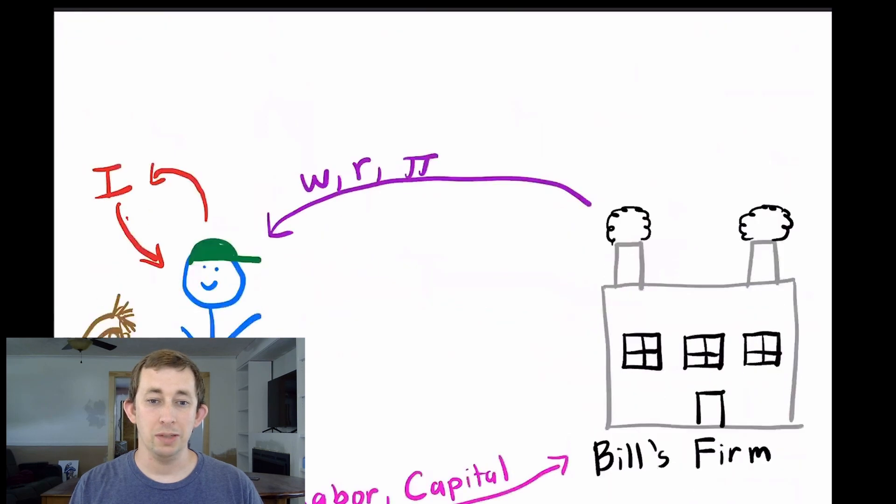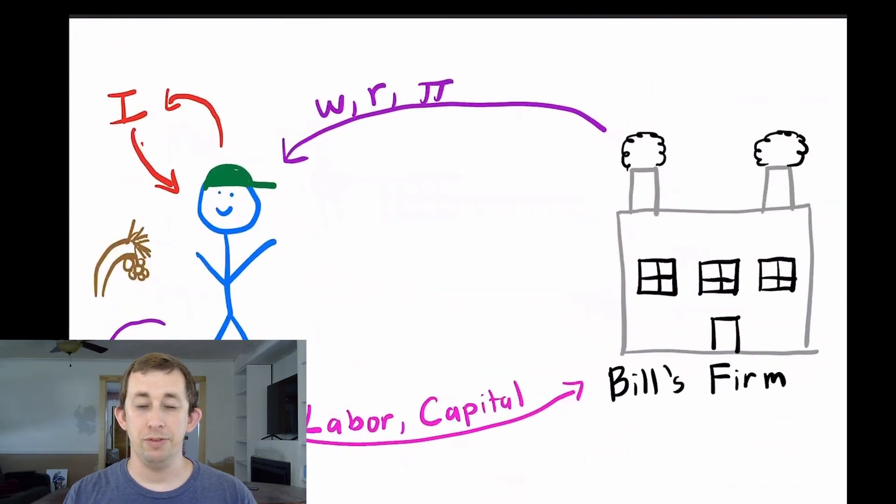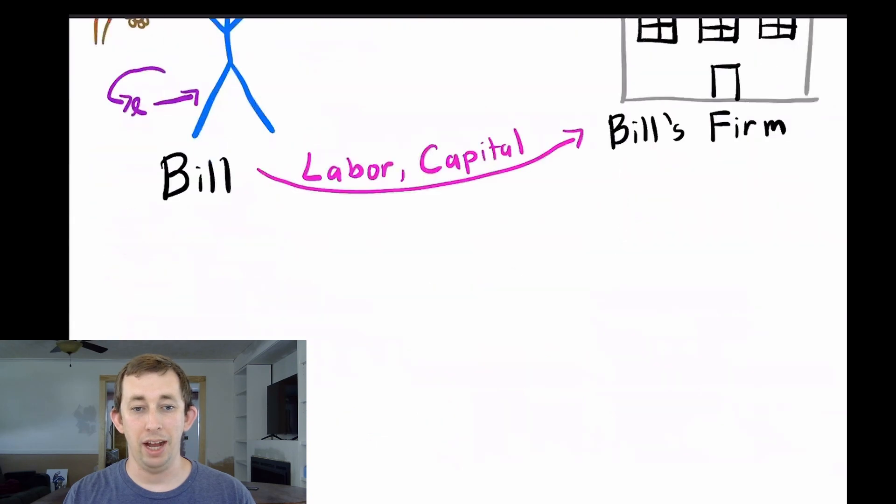Here's a further simplification of that information, where Bill sends his labor and capital to Bill's firm and in return gets paid a wage, a rental rate, and any profit. He can invest in himself, and he can give himself leisure by not working.